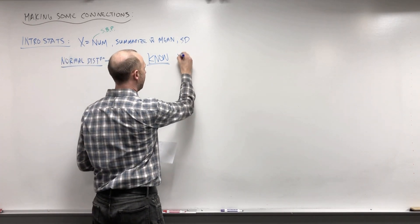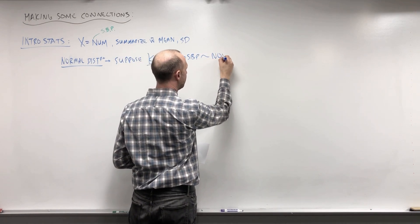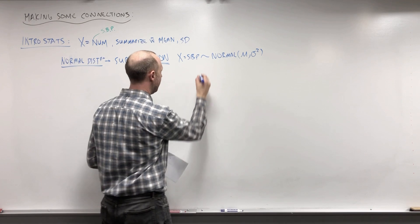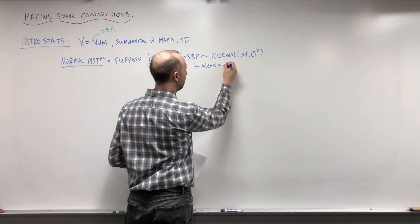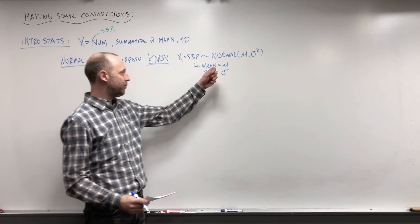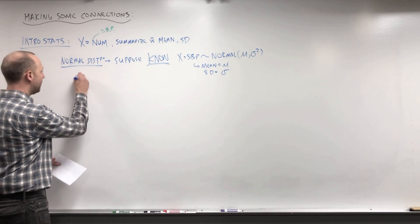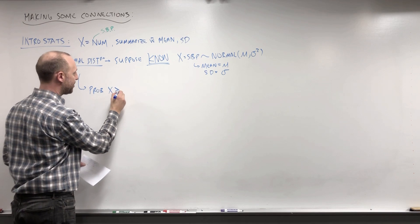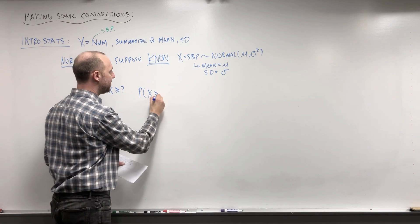Suppose you know that X, being the systolic blood pressure, follows a normal distribution with a particular mean and variance - that it has a mean of mu and a standard deviation of sigma. So you know the true mean and the true standard deviation of the systolic blood pressure for a certain population, and then you learn to answer questions like: what's the probability that X, the systolic blood pressure, is greater than or equal to some value?